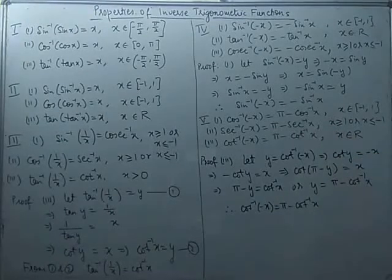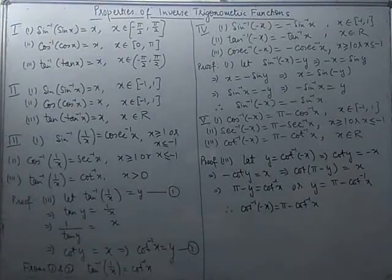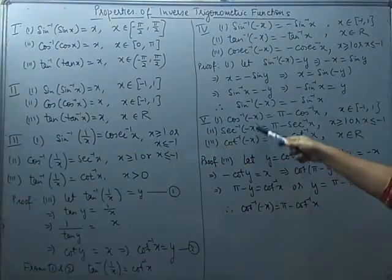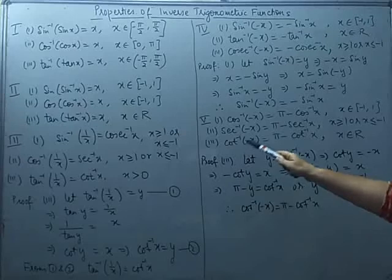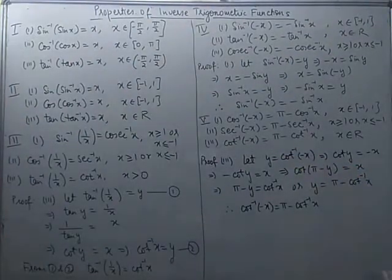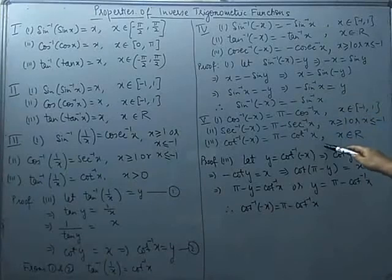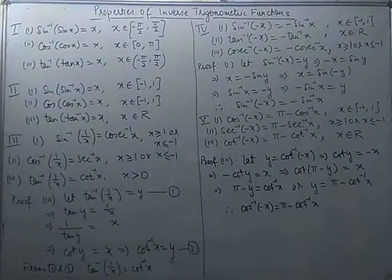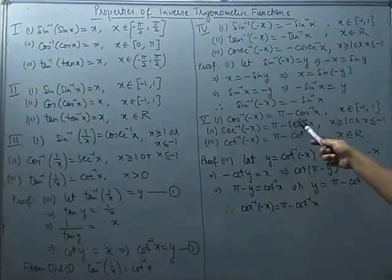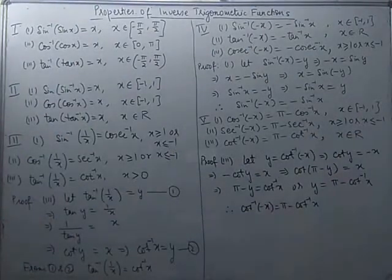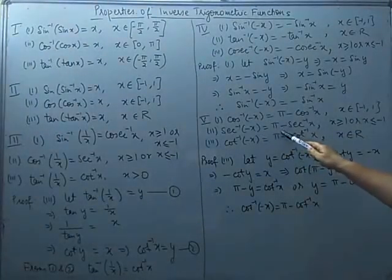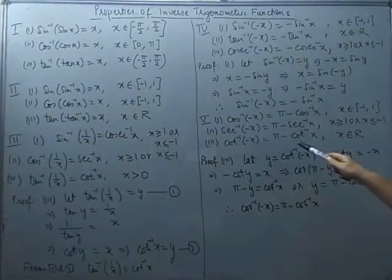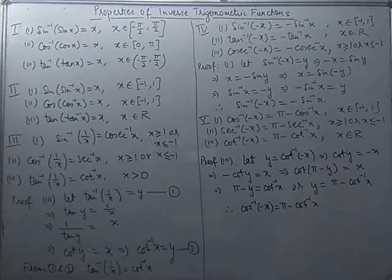We know that cos(-θ) is not -cos θ — it equals cos θ. The same holds for sec(-θ). However, for cos⁻¹(-x), sec⁻¹(-x), and cot⁻¹(-x), the results are of a different form: cos⁻¹(-x) = π - cos⁻¹x, sec⁻¹(-x) = π - sec⁻¹x, and cot⁻¹(-x) = π - cot⁻¹x.